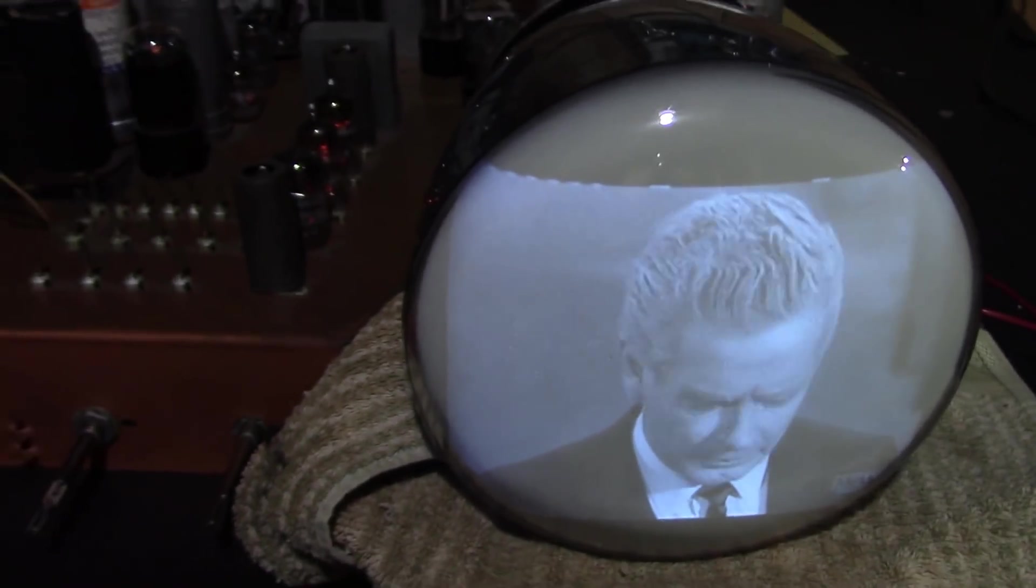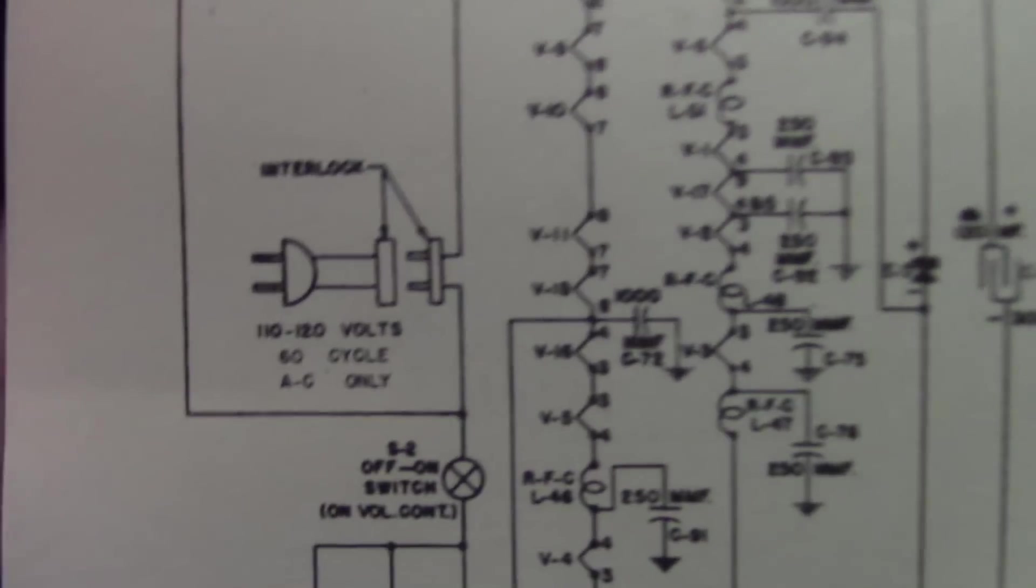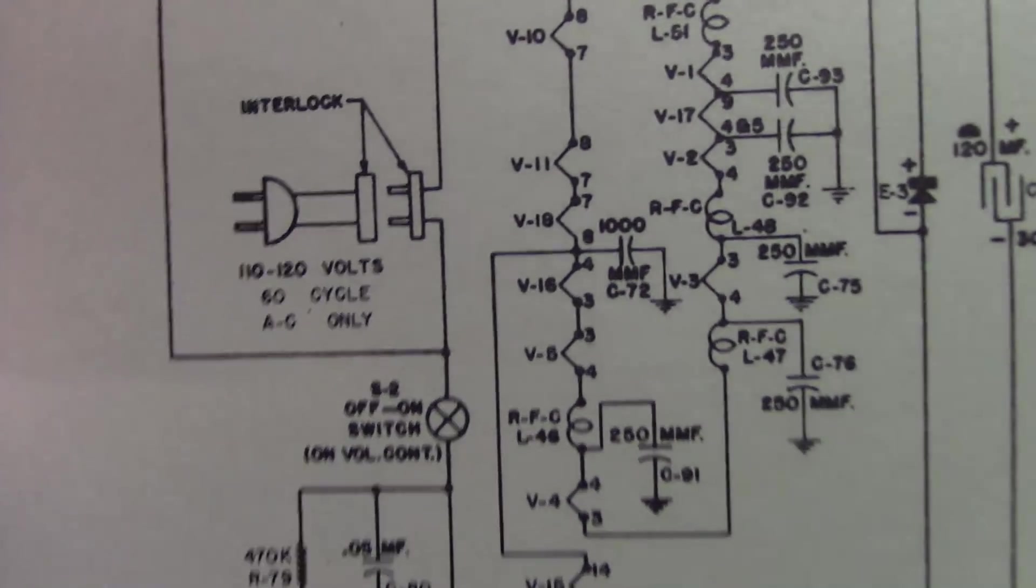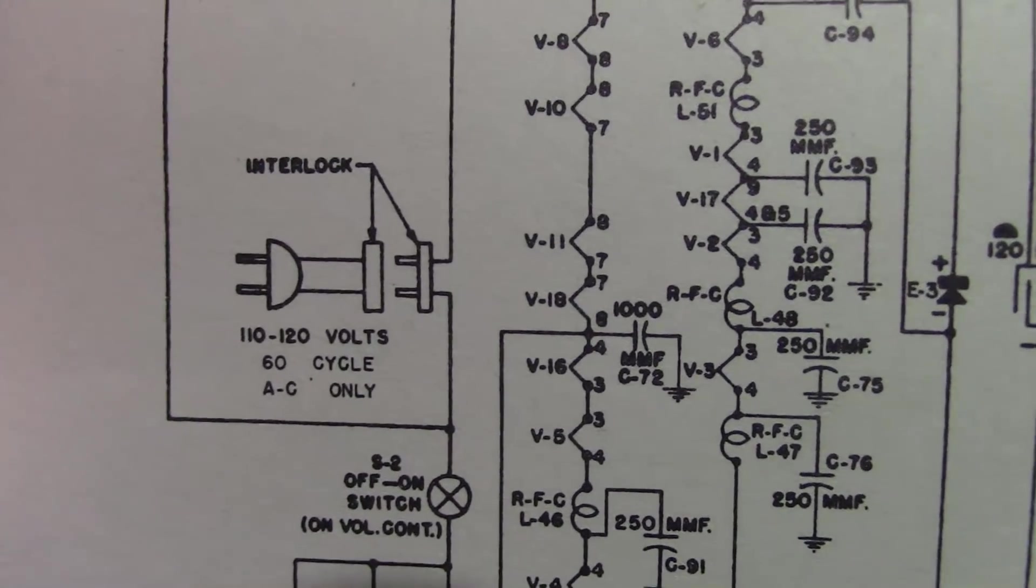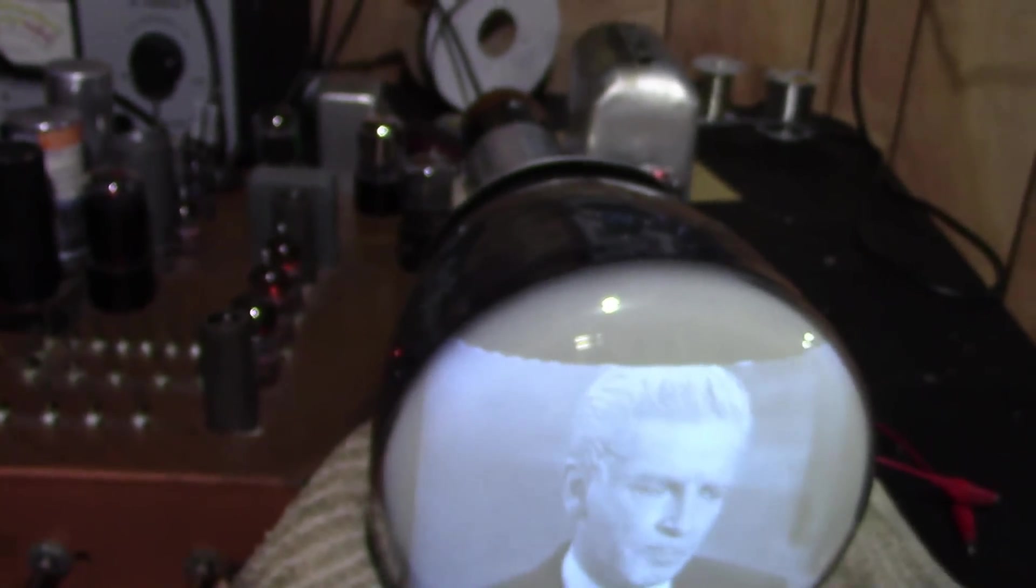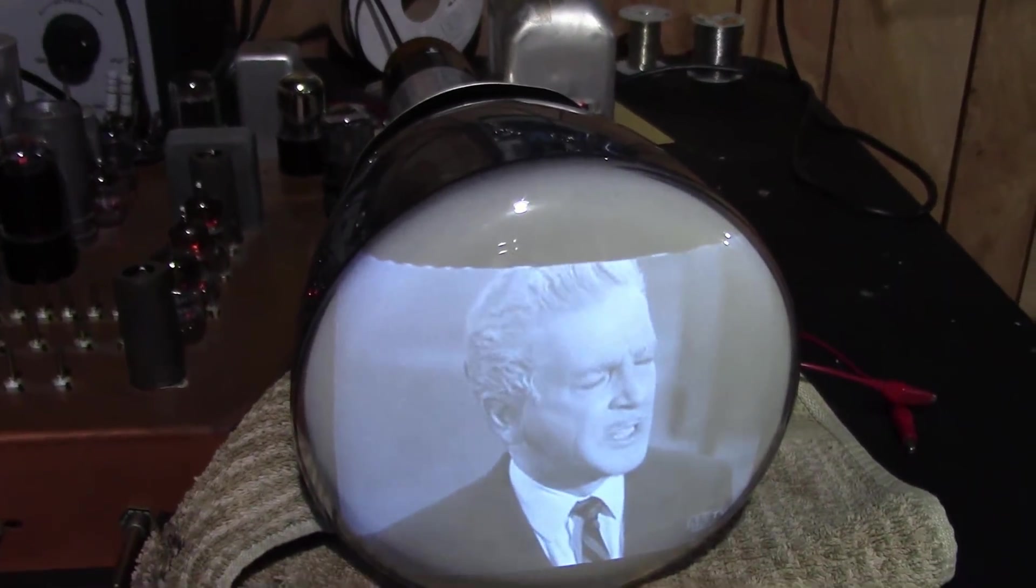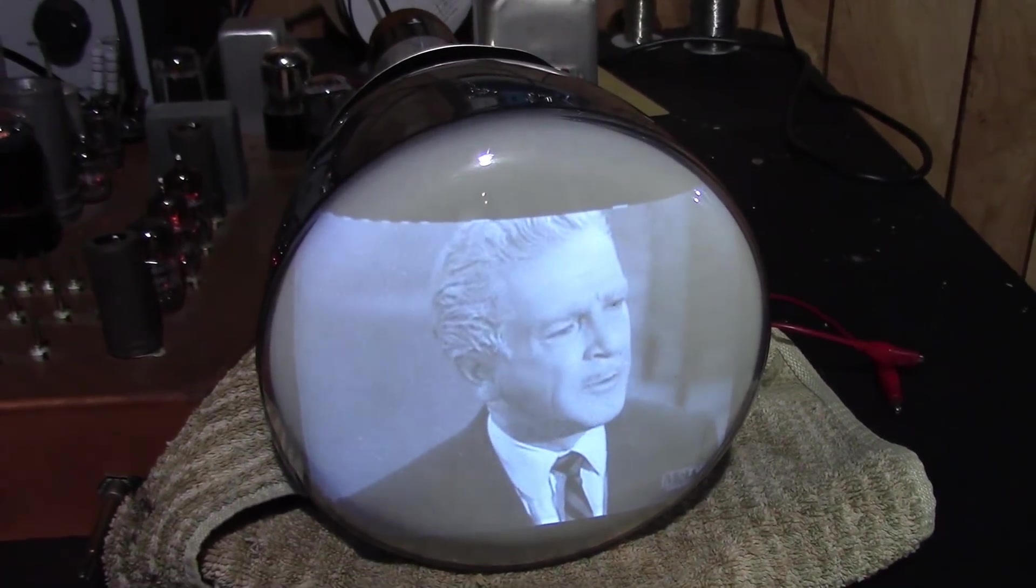I don't think the set has a power line filter. I could try putting a safety cap across the AC line. Maybe I'm picking up some noise from the AC line. I could try turning off all the lights, including the fluorescent lights, see if that makes any difference. That's easy enough to do.